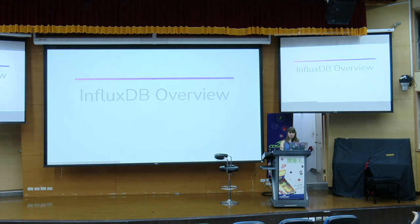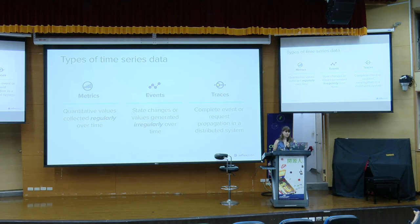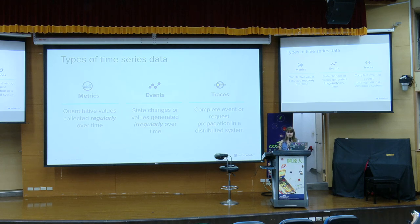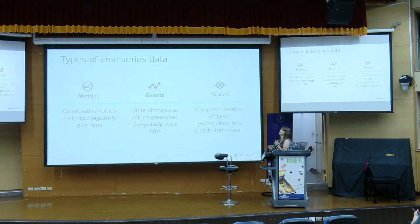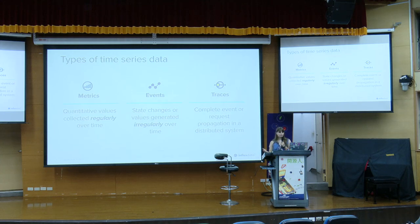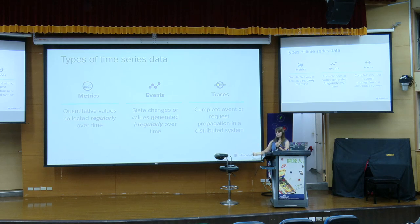A quick InfluxDB overview. Time series data comes in three types: metrics, which are values collected regularly over time — the most common type, especially from IoT devices; events, which are states generated irregularly over time, like someone clicking a button on a website — not consistent, it's irregular; and a trace, which is basically a stack trace — a complete event, like the full event of clicking a button, it taking you to the next page, or it crashing.